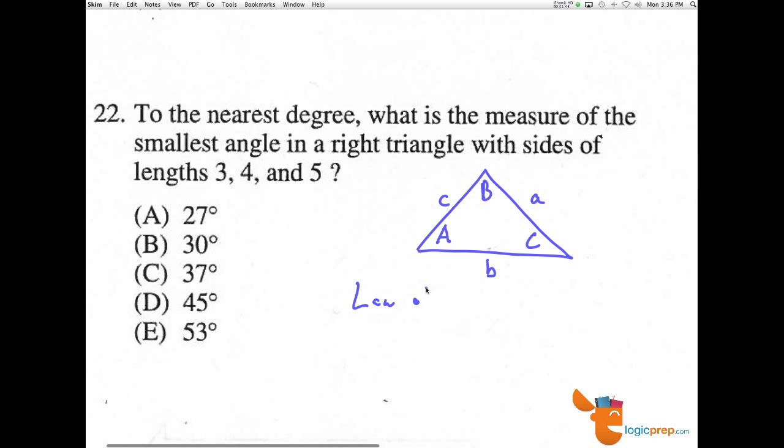And the law of sines, which is very helpful for non-right triangles—we can use them for all triangles—states that the sine of any angle over its opposite side will equal the sine of any other angle over its respective opposite side.